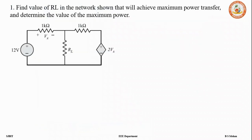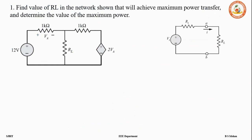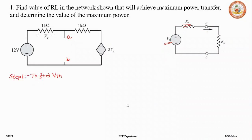Let's take a problem to understand. We have been asked to find the value of RL using the maximum power transfer theorem. As we have seen, we take the use of Thevenin theorem, and in Thevenin theorem one has to find the value of VTH and the value of RTH. So the first step is to remove the load resistance and mark the terminals as A and B, then find the value of VTH.